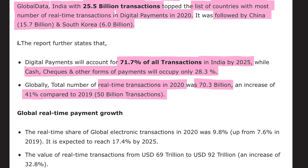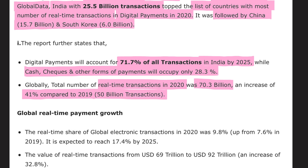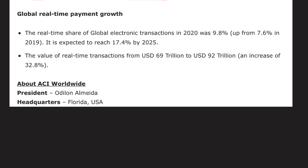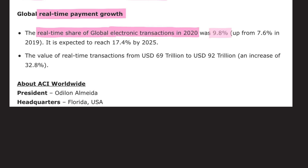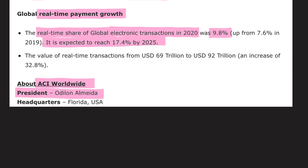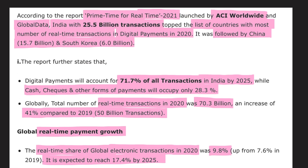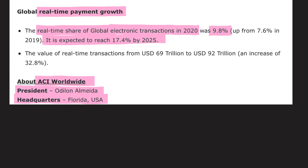Globally, the total number of real-time transactions in 2020 was 70.3 billion, showing an increase of 41% compared to 50 billion transactions in 2019. The real-time share of global electronic transactions in 2020 was 9.8%, expected to reach 17.4% by 2025. ACI Worldwide's president is Odilon Almeida and the headquarter is in Florida, USA.